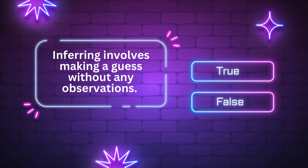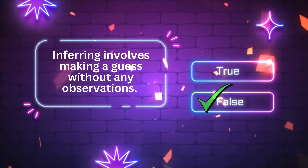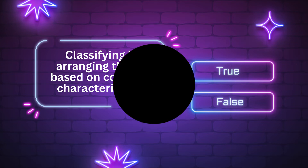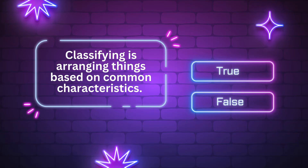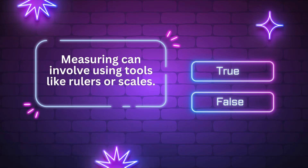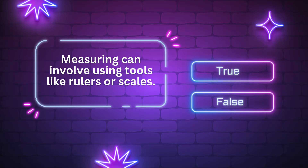Inferring involves making a guess without any observations. True or false? The answer is false. Measuring can involve using tools like rulers or scales. True or false? The answer is true.